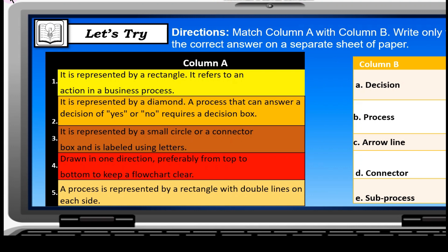Number three: It is represented by a small circle or a connector box and is labeled using letters. Yes, the answer is connector, D. Number four: Drawn in one direction, preferably from top to bottom, to keep a flowchart clear.